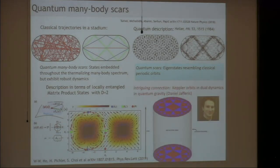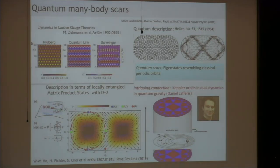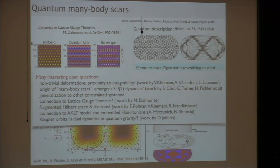Our string theorist colleague Daniel Harlow was very excited about this, as he thinks it may be connected to Kepler orbits of particles around a black hole in quantum gravity. There are also some very nice connections to gauge theory dynamics. By now there is almost a paper every week providing another explanation. I think this really points out that the area of quantum dynamics is where this near-term quantum machine can really make an impact, because these are very complex systems which are very hard to simulate. This is very exciting.